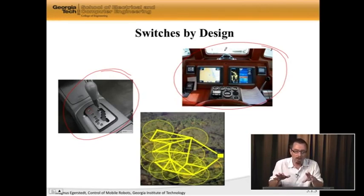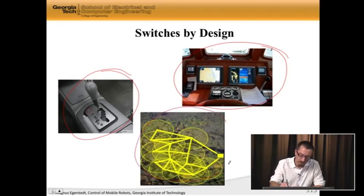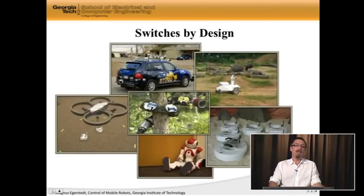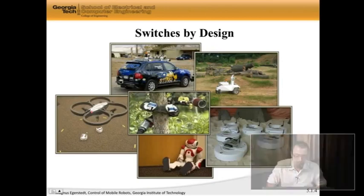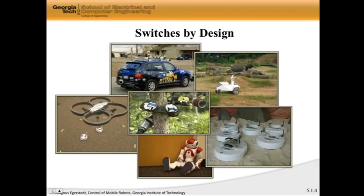Instead of designing one controller that takes me from Atlanta, Georgia to Stockholm, Sweden, you have a bunch of different controllers that you're switching through in order to do this. And at the bottom here, we have a sensor network, where in order to preserve power, you're turning sensors on and off on purpose. So you're switching by design, rather than by necessity. And in robotics, everywhere it switches by design. This is our self-driving Georgia Tech car that switches between different behaviors depending on what's happening in the world. Here is a mobile robot that switches between behaviors depending on whether or not there are obstacles.